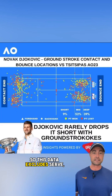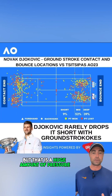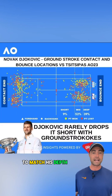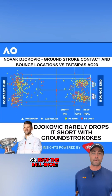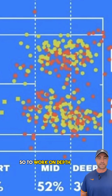This data excludes serve, return, and net play. But that is a huge amount of pressure that he's putting on his opponent to match his depth or drop the ball short and allow Novak to come forward and attack.